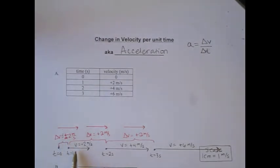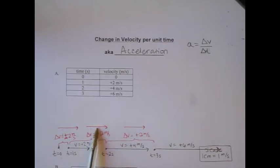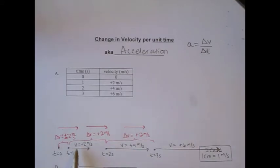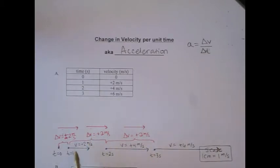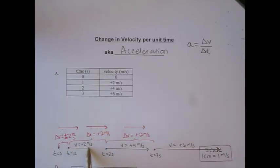If we take the velocity vector of two meters per second and add to it the change in velocity of two meters per second, we get the velocity at the next time, which is four meters per second. So at one second we had a velocity of two, it changed by positive two, giving us the next velocity of four. You can add these vectors end to end — just like with forces, except here they're parallel. This vector plus this one on the end gives you one that's four centimeters long, representing four meters per second.